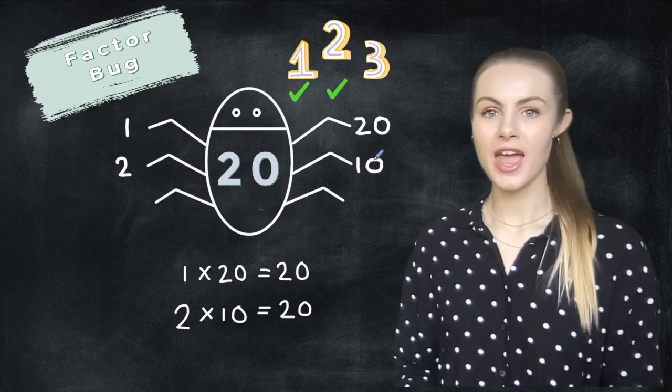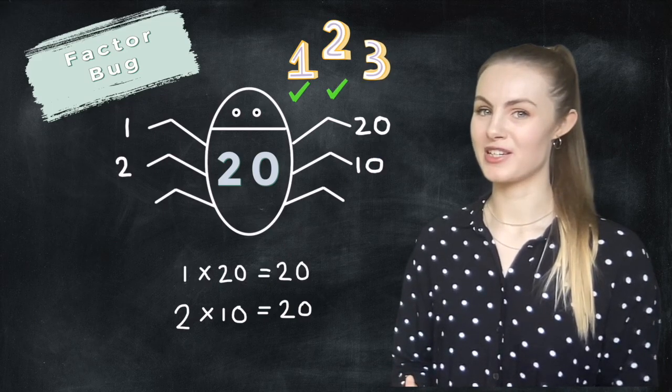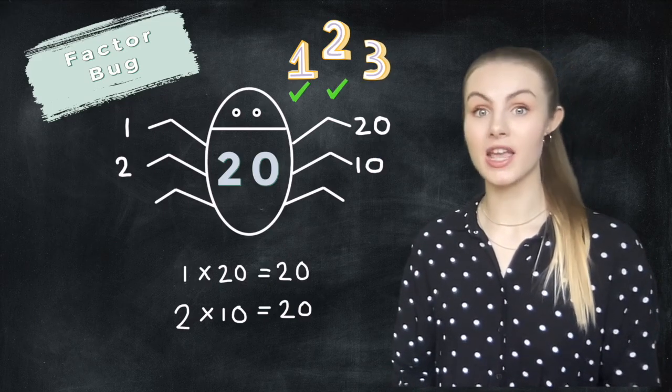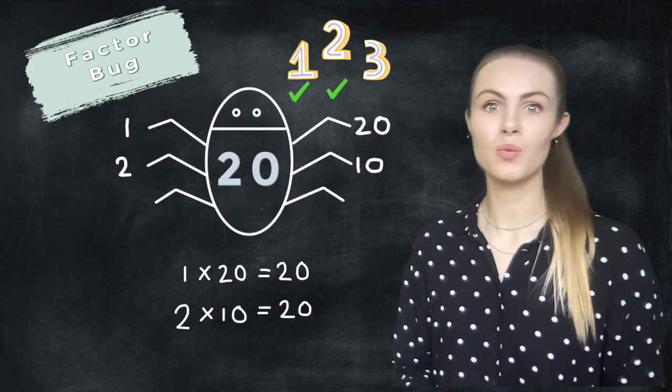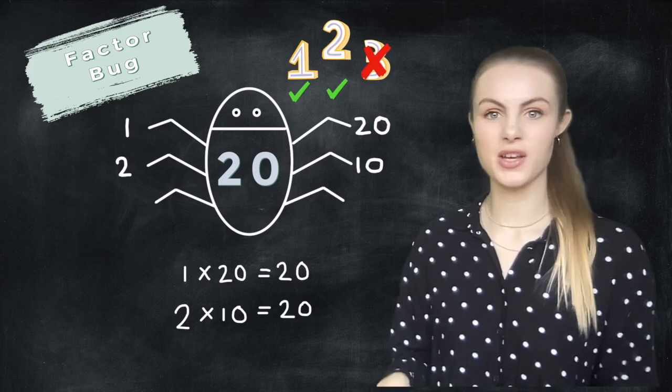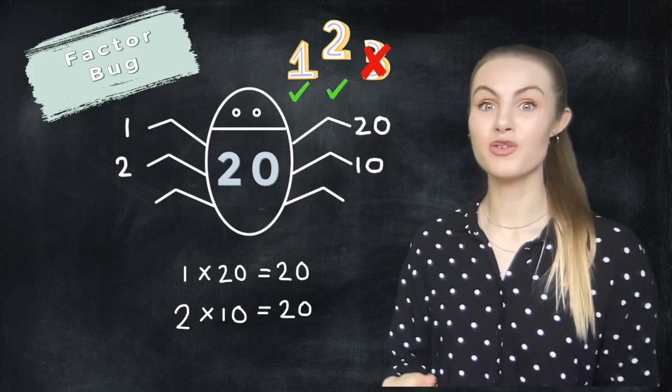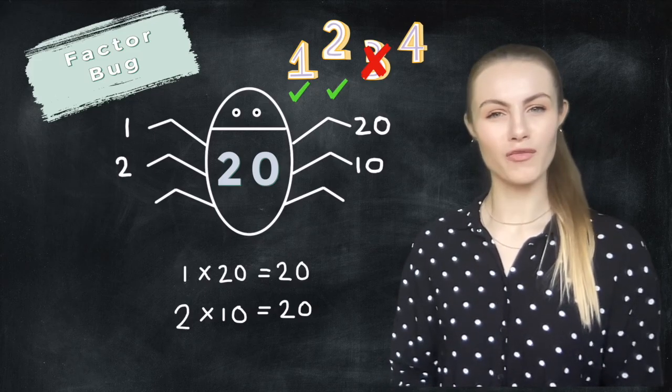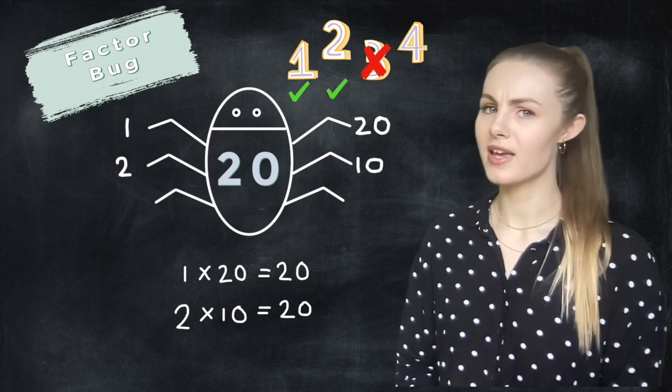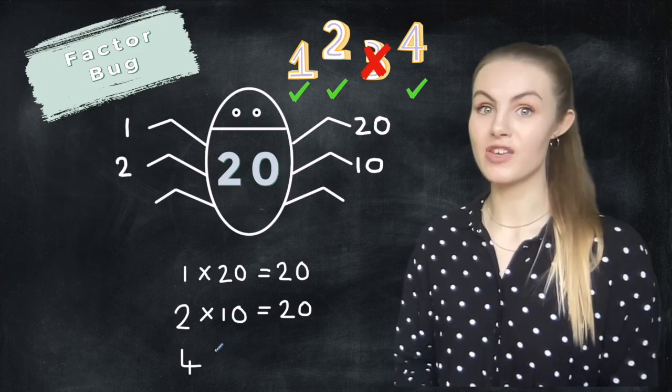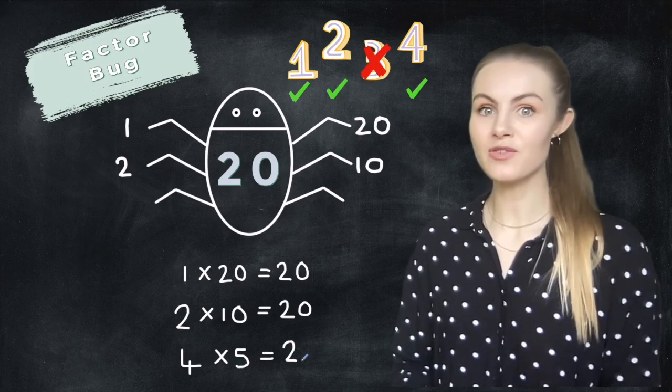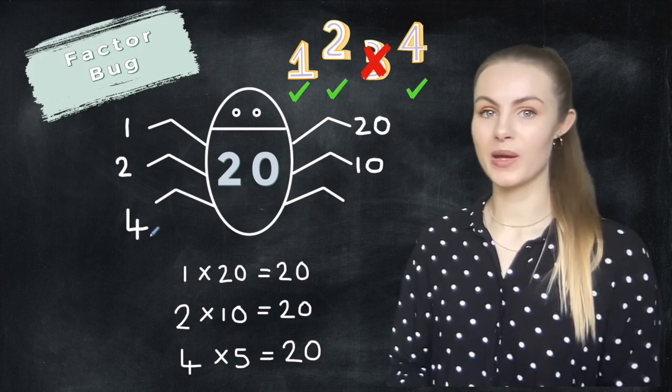Now we move on to 3. Is 3 a factor of 20? Or in other words, is 20 in the 3 times table? No it's not. If we count in 3's we won't reach 20. So we're going to cross that one off. We're then going to move on to 4. Is 4 a factor of 20? Or in other words, is 20 in the 4 times table? Yes it is. 4 times 5 equals 20. So 4 and 5 are factors of 20.